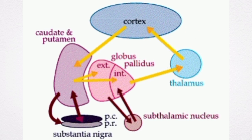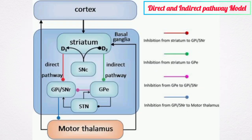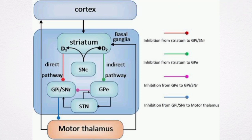The classic model of the connections between the nuclei in the basal ganglia is the direct and indirect pathway model. In this model, there are two important pathways of connection between the nuclei: the direct and the indirect pathways.